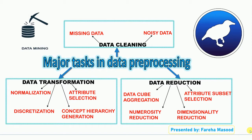In data cleaning there are two main parts: missing data and noisy data. When we are working with big data, both things happen very frequently — there is some data which is missing and there is some noise in our data. When we have missing data, we can do two things: first, we can ignore the tuples, and second, we can fill the missing values. In today's session we are also going to learn how to fill missing values using Weka software.